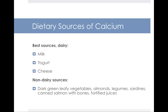Dairy foods are the best sources of calcium — things like milk, yogurt, and cheese naturally contain calcium. Other sources include dark green leafy vegetables, almonds, legumes, and sardines. Anytime you have canned fish with bones, you're eating the calcium deposits of that organism. Also, fortified juices like orange juice have calcium added by manufacturers for people who aren't getting their calcium from dairy products.